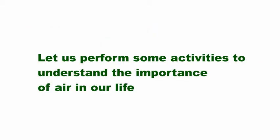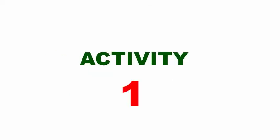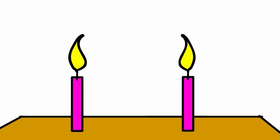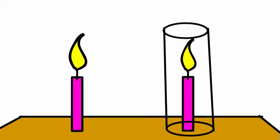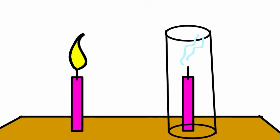Let us perform some activities to understand the importance of air in our life. Activity 1: Take two lit candles. Cover one of them with a glass tumbler. We observe that the covered candle soon gets put out but the uncovered candle keeps on burning. This happens because the covered candle soon uses all the oxygen present in air inside the tumbler. It does not get more air and hence more oxygen needed to keep burning. It therefore stops burning after a while.